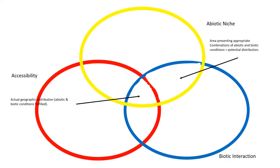This Venn diagram explains what a niche actually is and its purpose. In yellow we have the abiotic niche, blue is the biotic interaction, and red is the accessibility. Right between the yellow and the blue is the area representing appropriate combinations of abiotic and biotic conditions that make this crop suitable for potential distribution. Right in the middle, between the red, yellow and blue, is the actual geographic distribution where abiotic and biotic factors are included. All three together — accessibility, abiotic niche and biotic interaction — is what actually allows the species to grow within the environment.